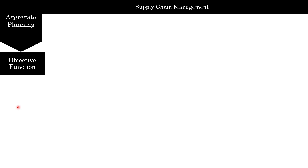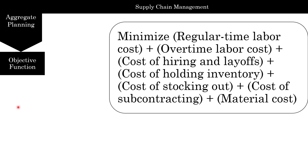The first thing you need to figure out is your objective. Your objective function is to minimize your total costs. These costs include regular time labor costs, overtime labor costs, cost of hiring and layoffs, cost of holding inventory, cost of stocking out, cost of subcontracting, and material costs.